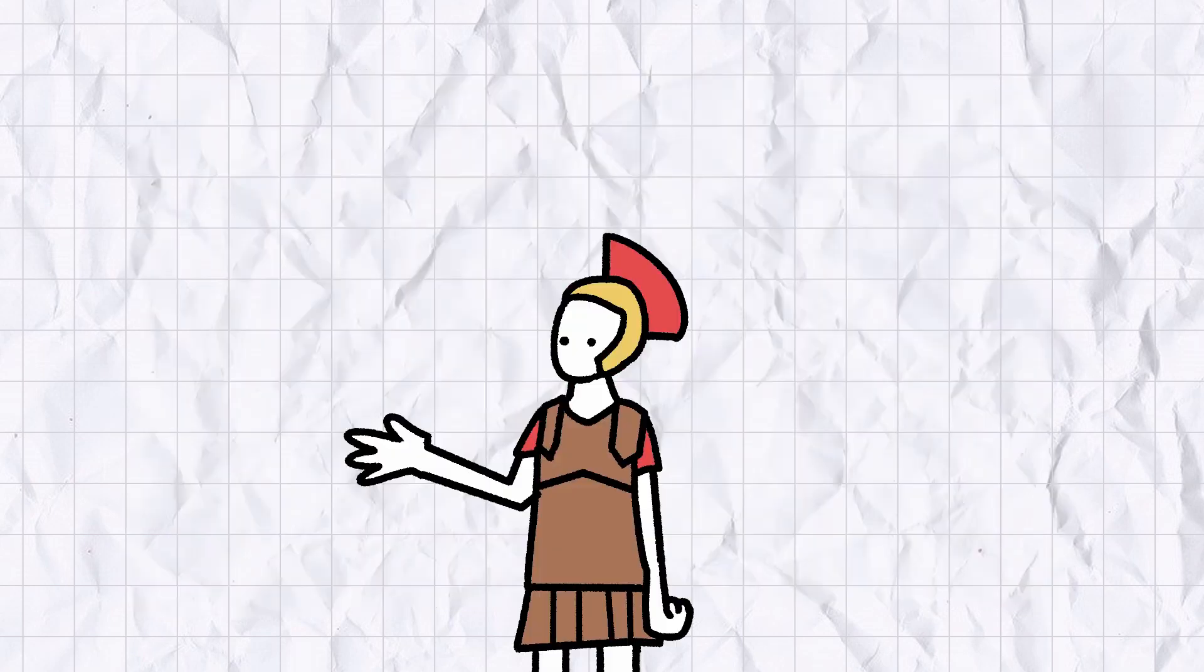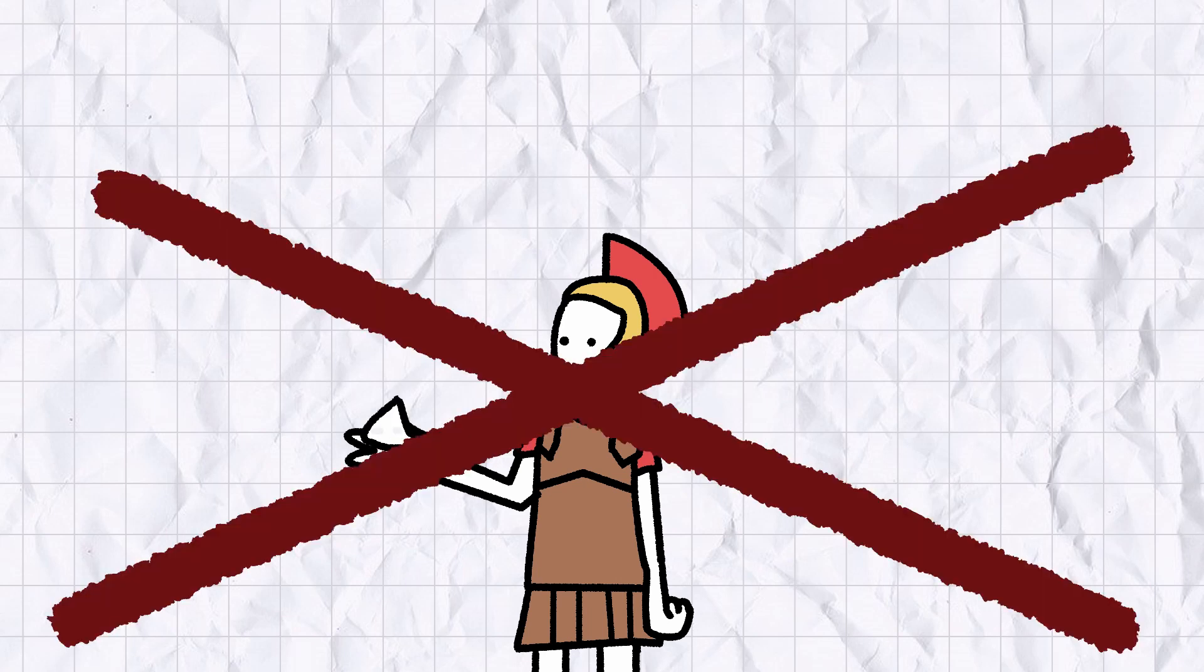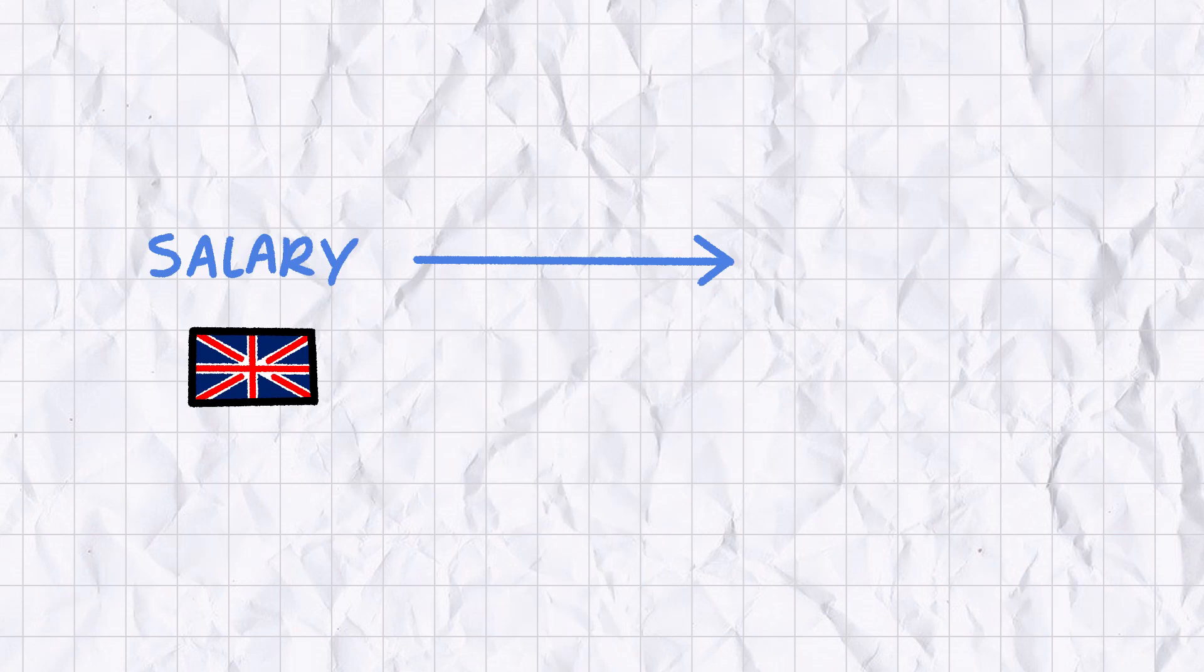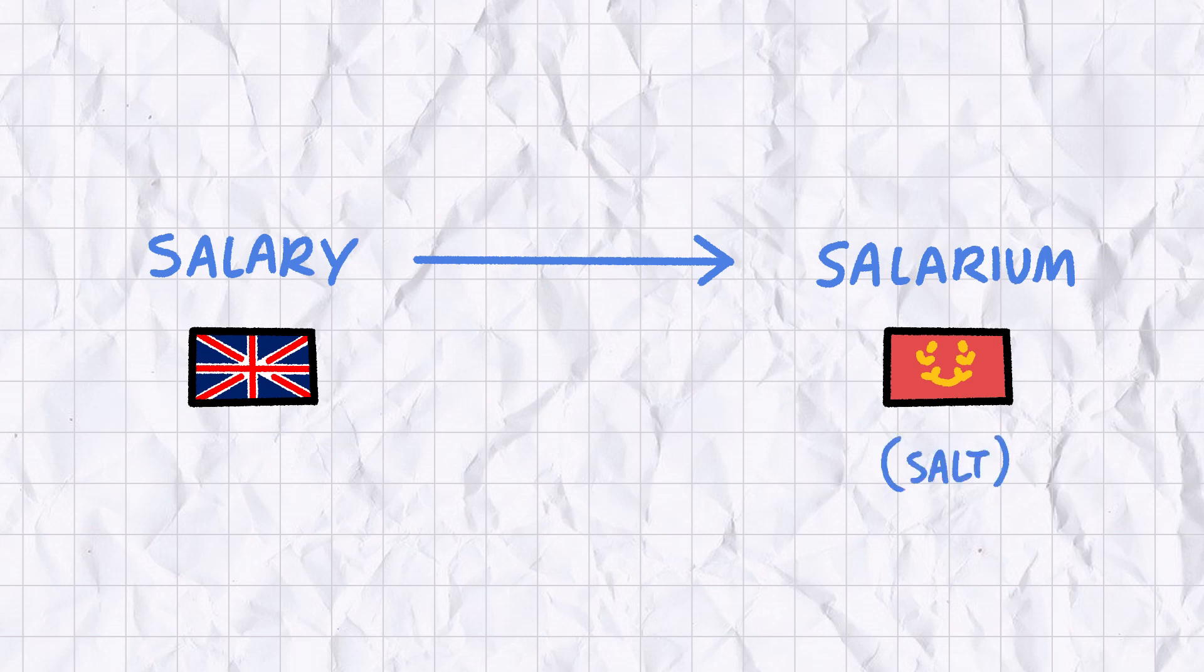In history class, you may have heard the Romans valued salt so highly they used it to pay their legionnaires. Well, sucks to be you if that's the case, because turns out it's completely incorrect. The salt salary myth came from a popular theory in linguistics that the English word salary was derived from the Latin word salarium, which literally translates to salt. The word for regular wage comes from salt, therefore, Romans paid in salt. Pretty easy.